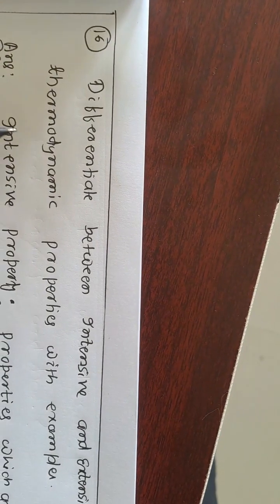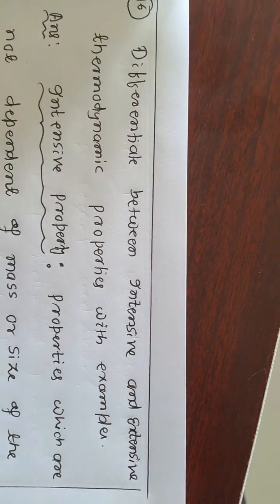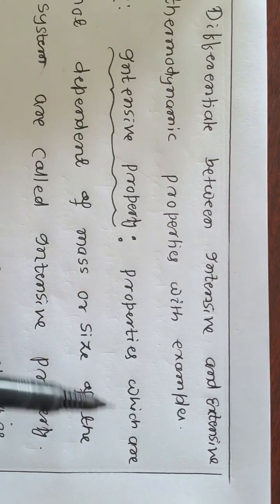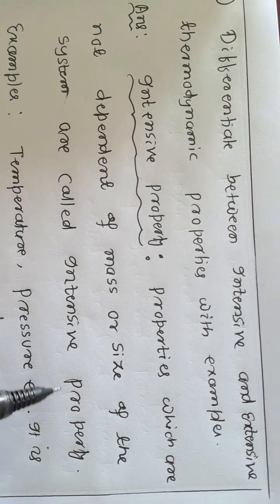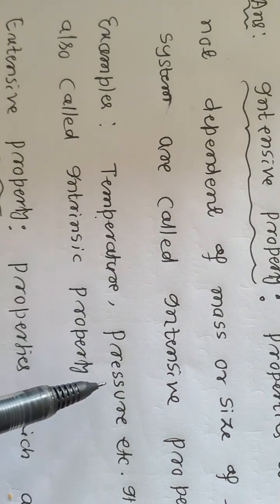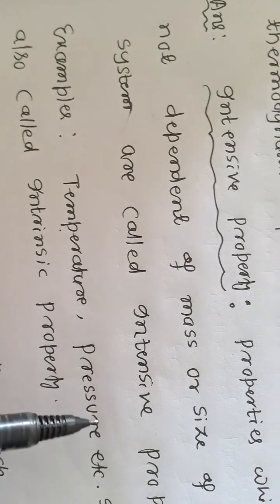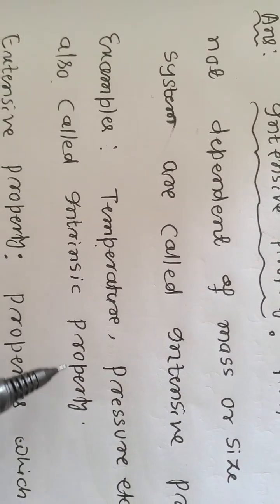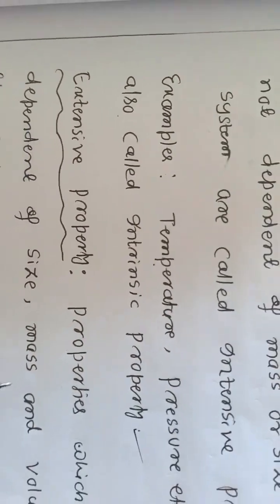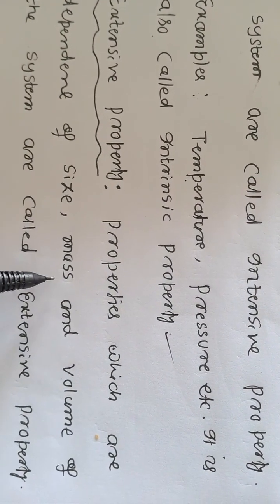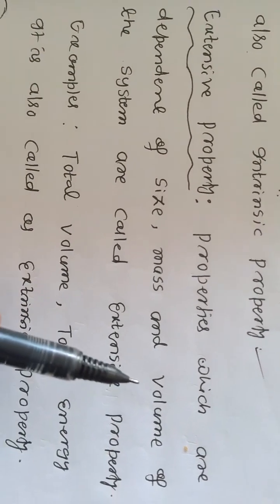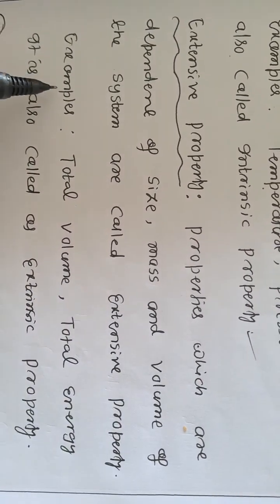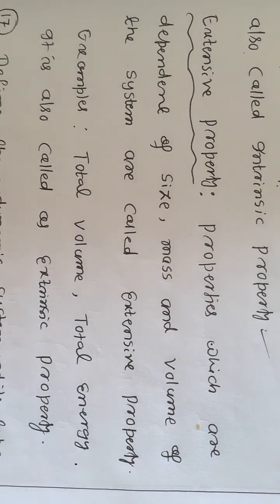What is the difference between intensive and extensive thermodynamic properties with examples? Intensive properties are those which are not dependent on the mass or size of the system, hence called intensive properties. Examples include temperature, pressure, etc. Extensive properties are those which are dependent on the size, mass, and volume of the system. Examples include total volume, total energy, etc.